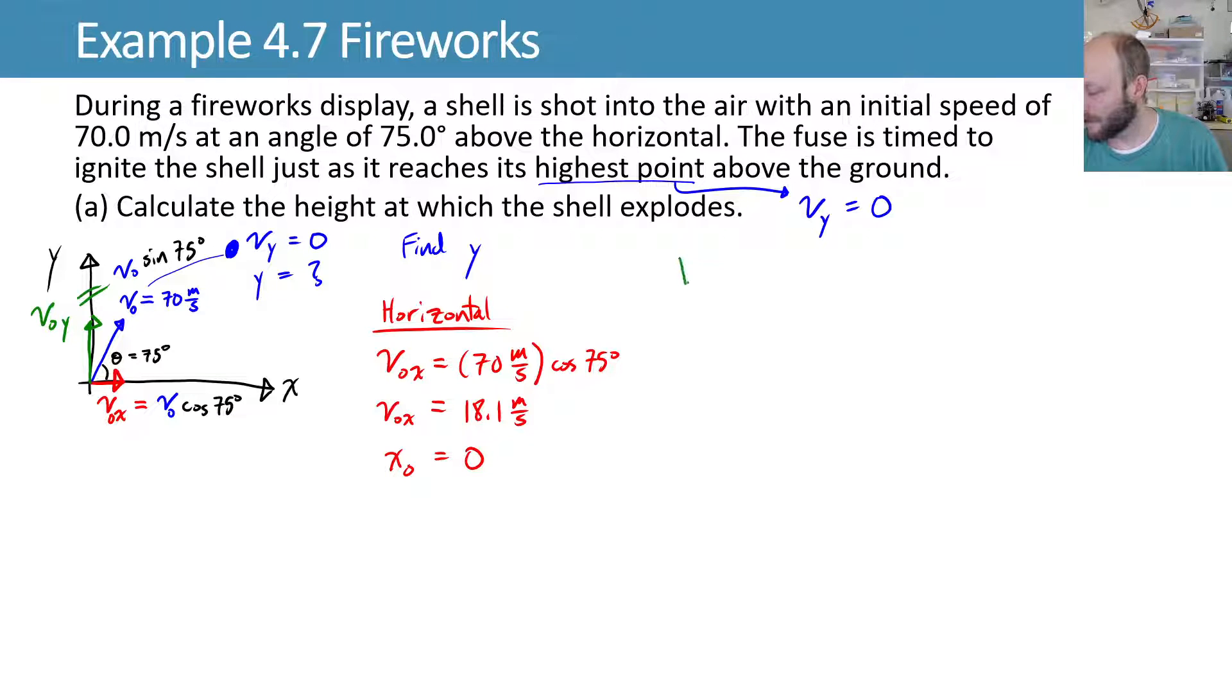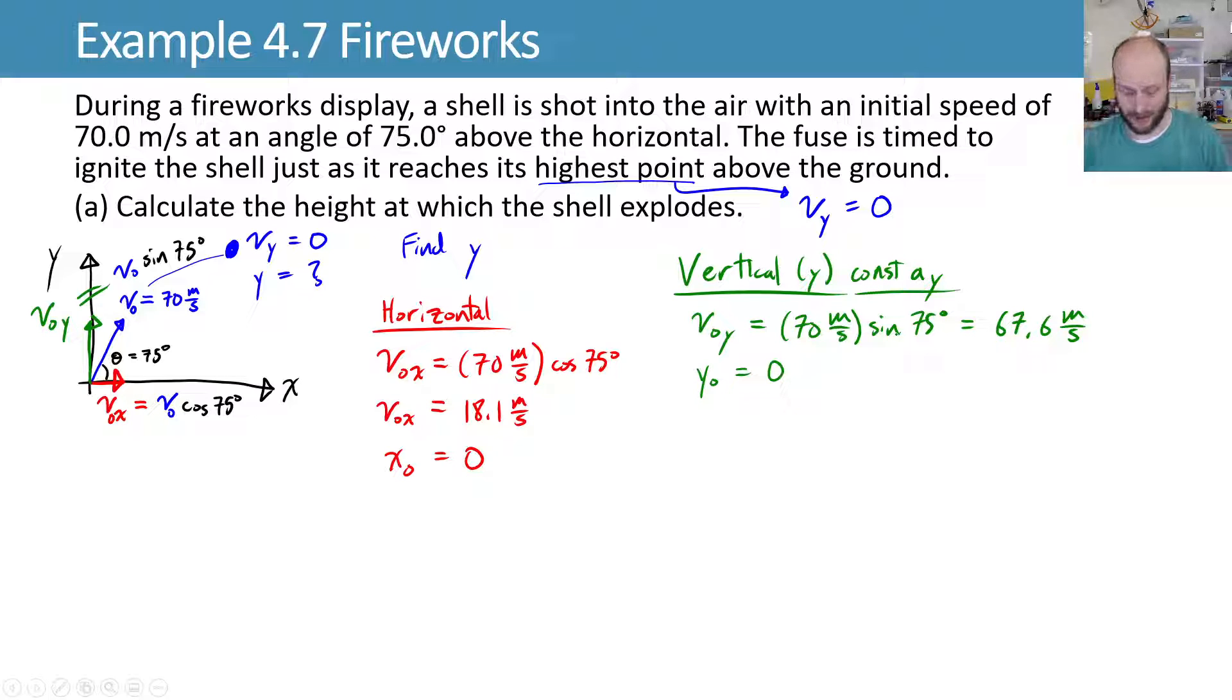Let's move on to the y. So for the vertical motion, or the y directional motion, we have constant acceleration in the y direction. Well, our initial y velocity is 70 meters per second, times the sine of 75 degrees, which gives us 67.6 meters per second as our y velocity going upward. Our initial height is zero. And then we're trying to find the final height. So we want to find the final height. And we know that our final velocity is equal to zero.